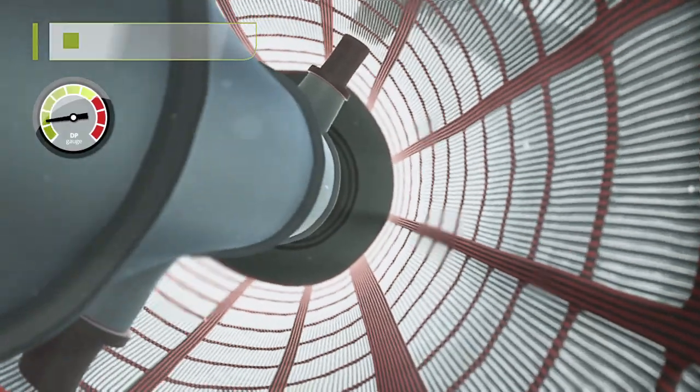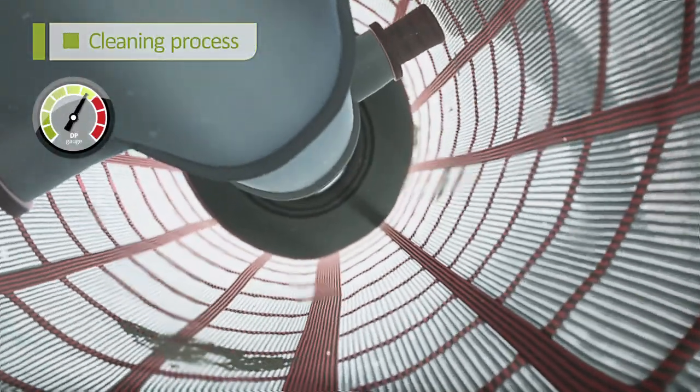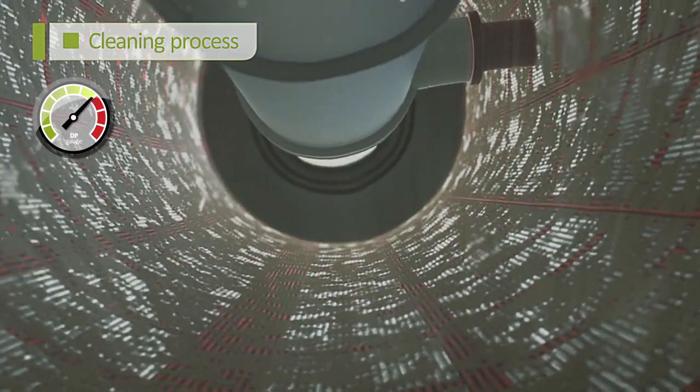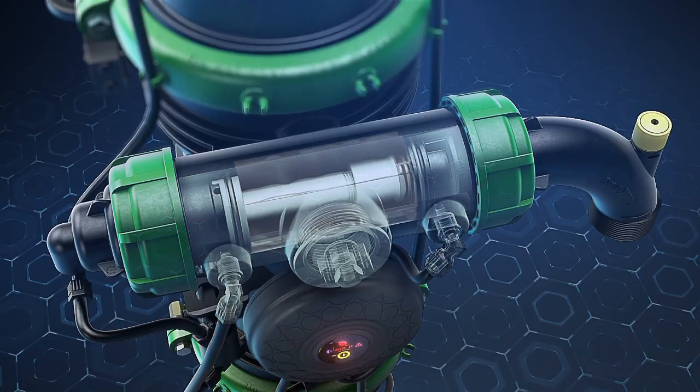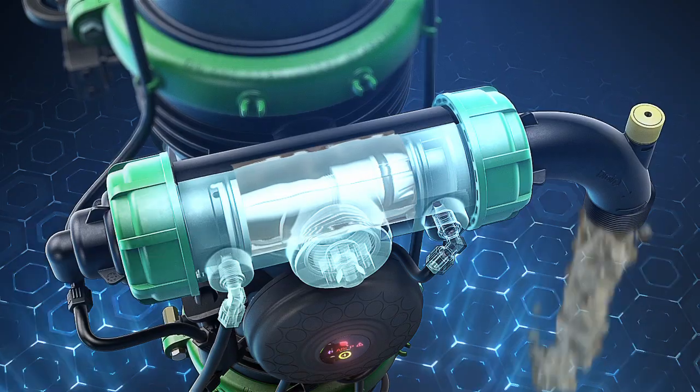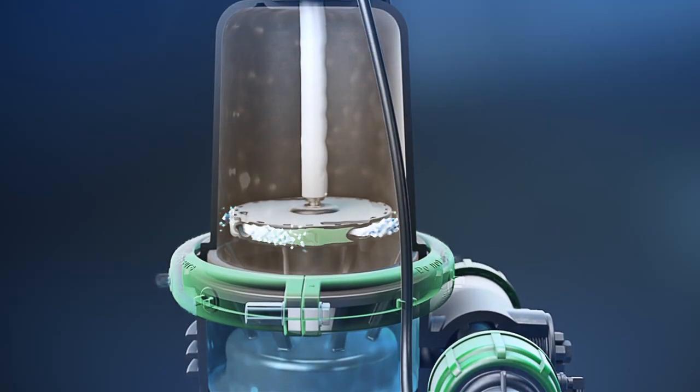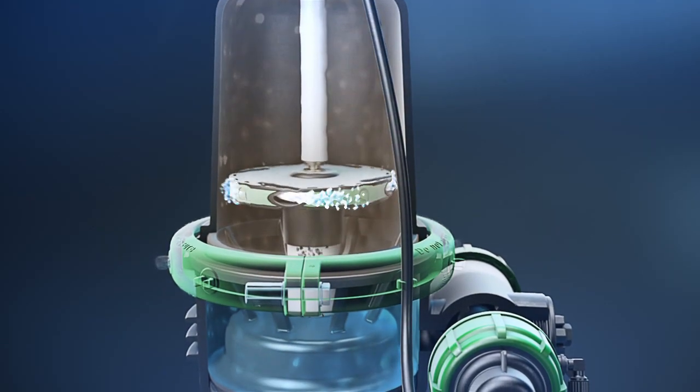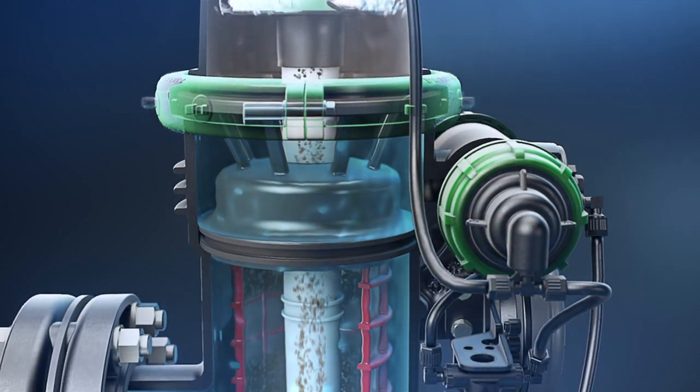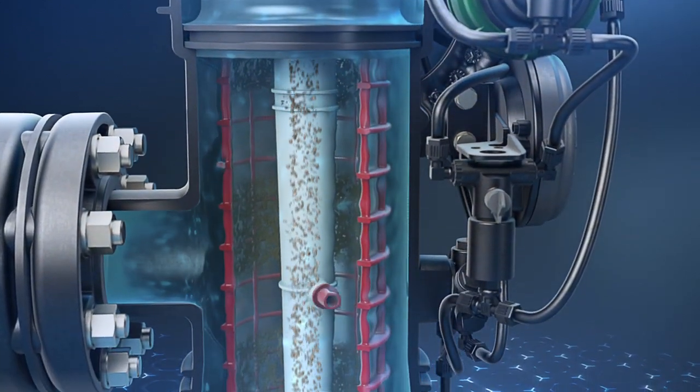The cleaning process begins when the pressure differential reaches a preset level and the system activates its self-cleaning cycle by opening the flushing valve. A strong suction force at the scanner nozzles effectively removes the dirt particles from the screens.